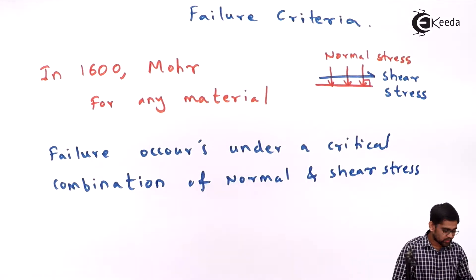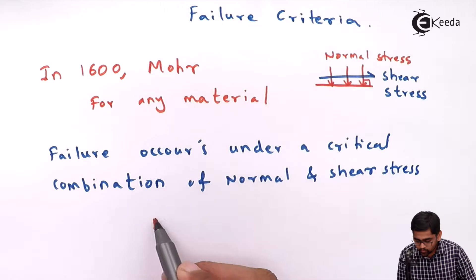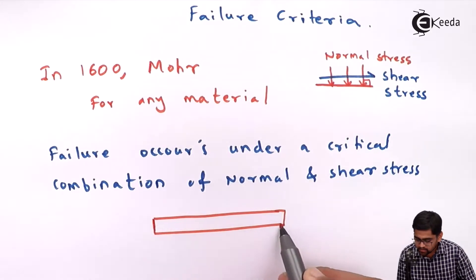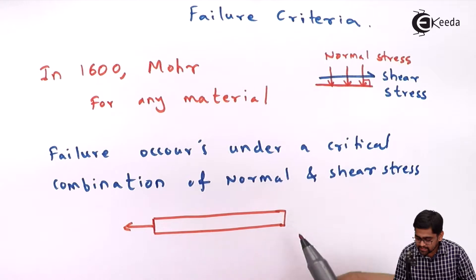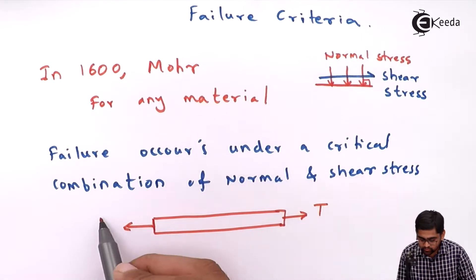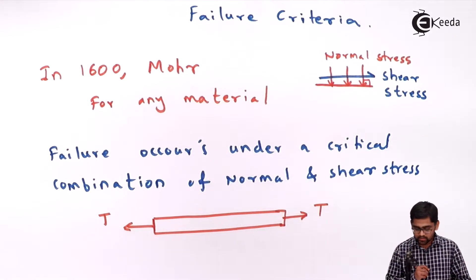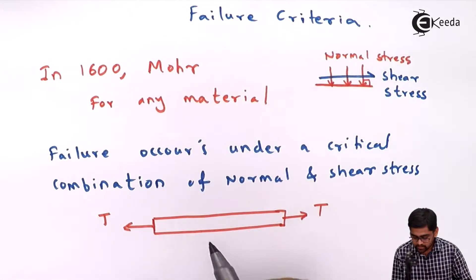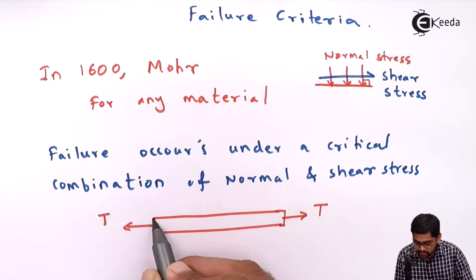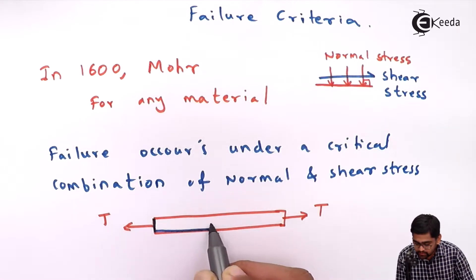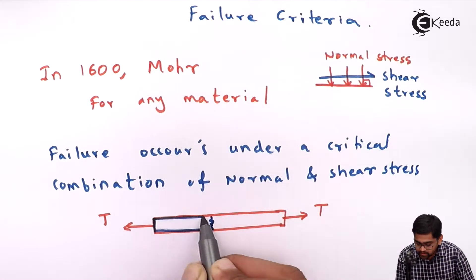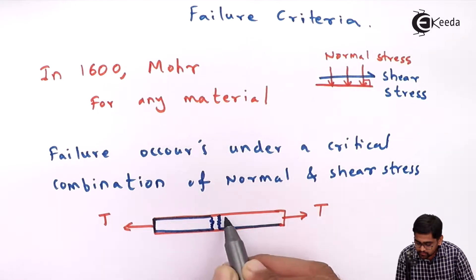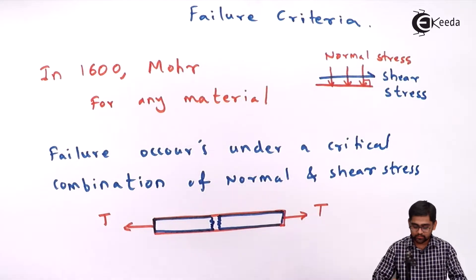If we take an example of steel and apply a tensile load or tensile force T, then if the material fails in pure tension mode, the material will detach as shown in the figure. We call this a pure tension failure — the material separates into two parts.